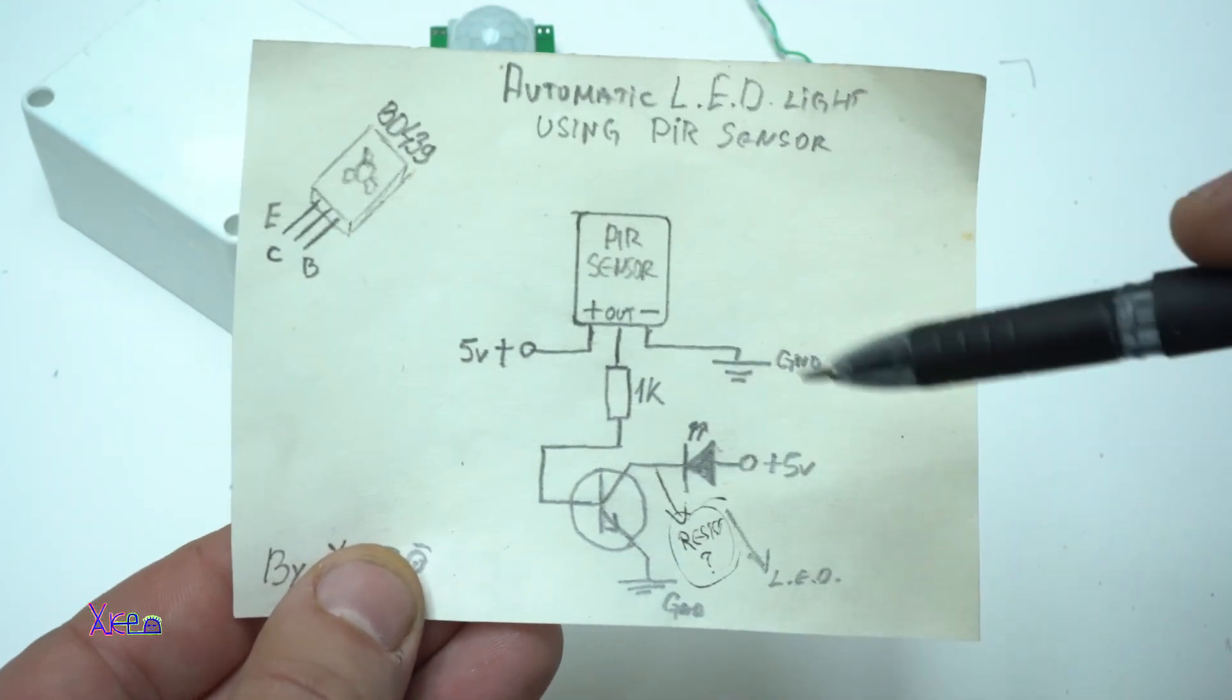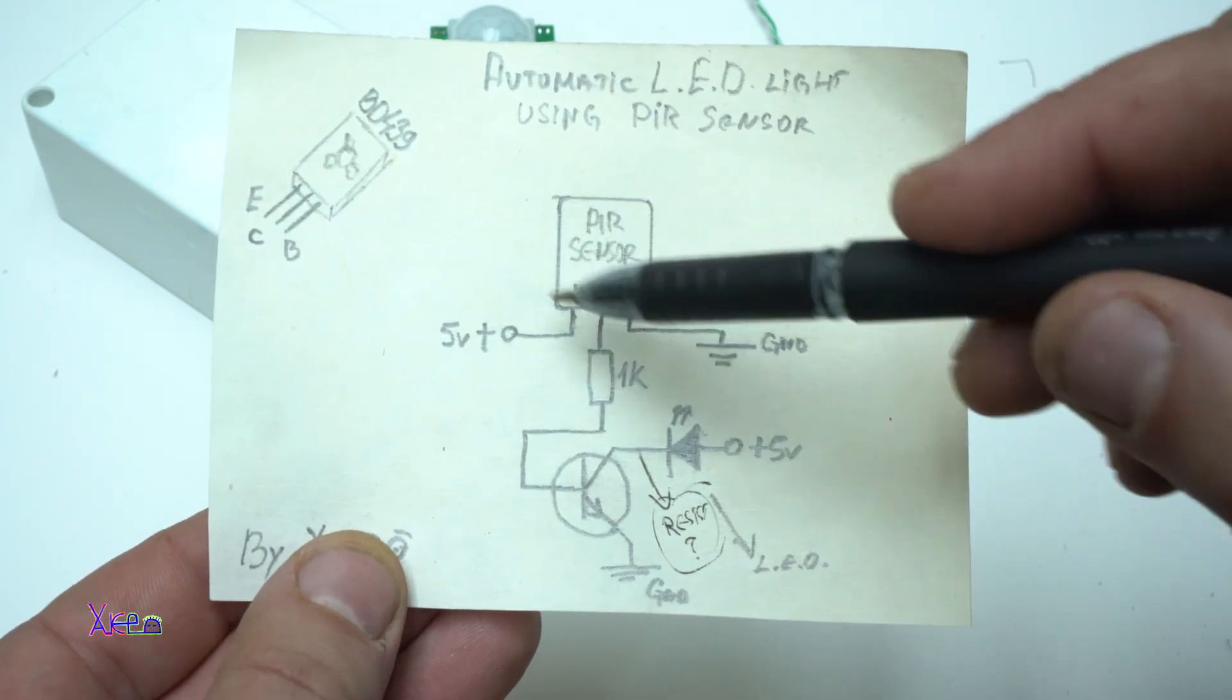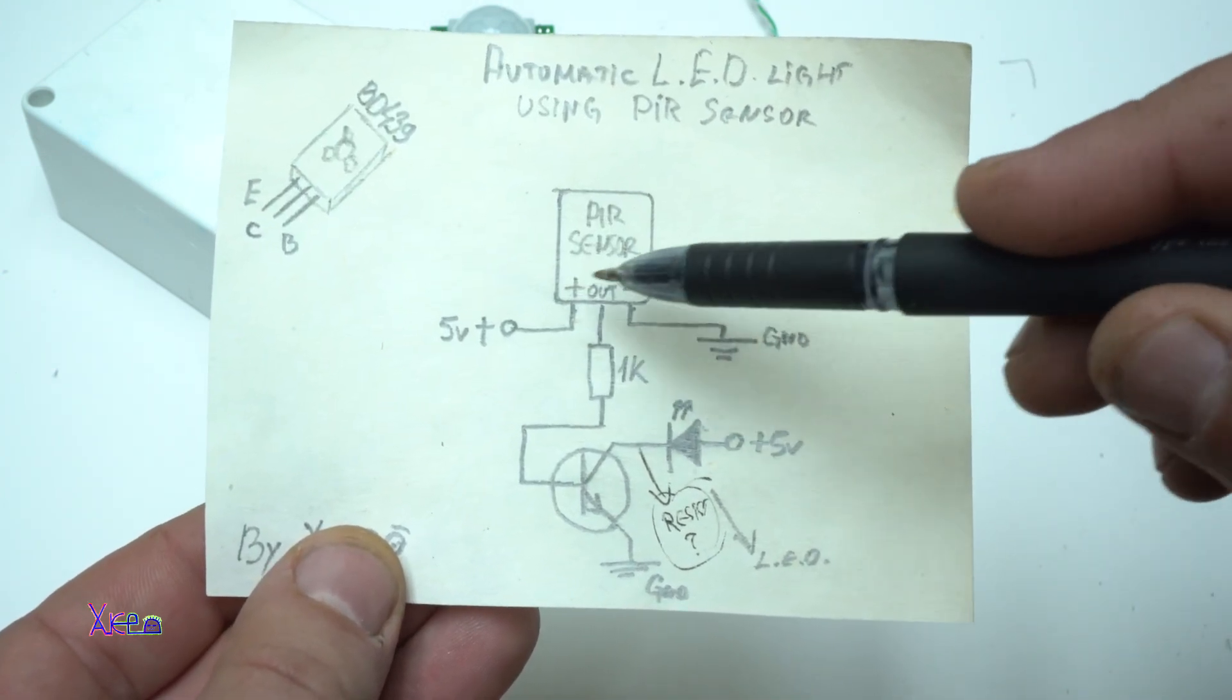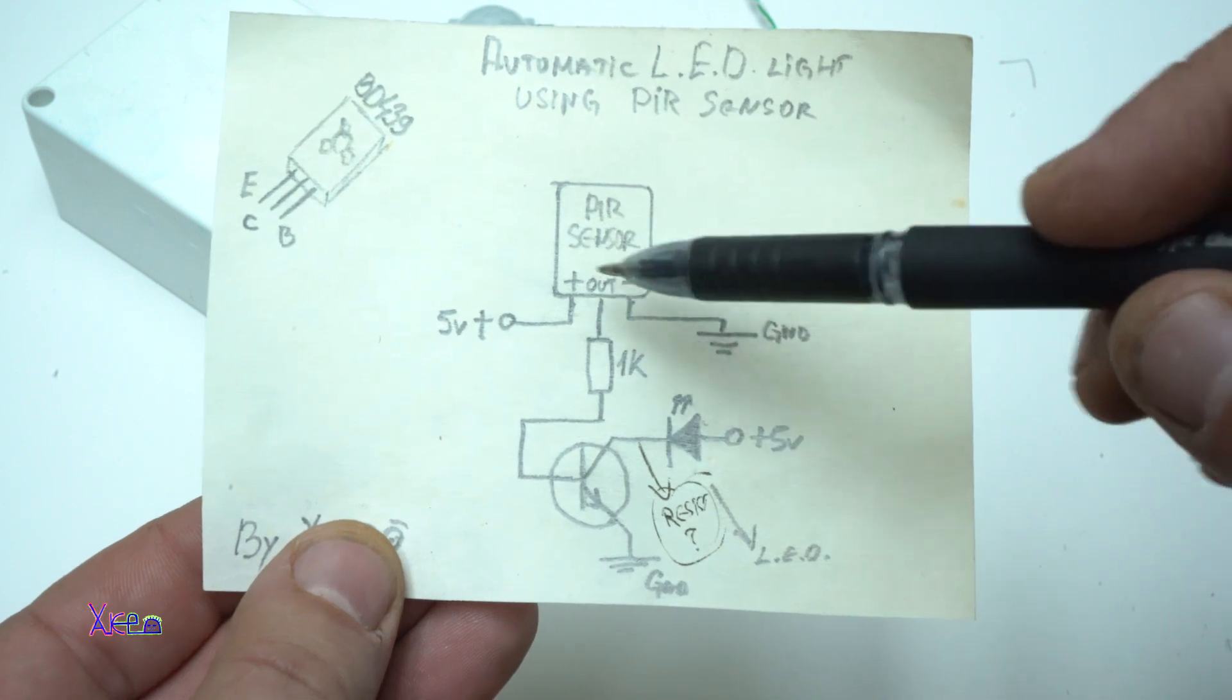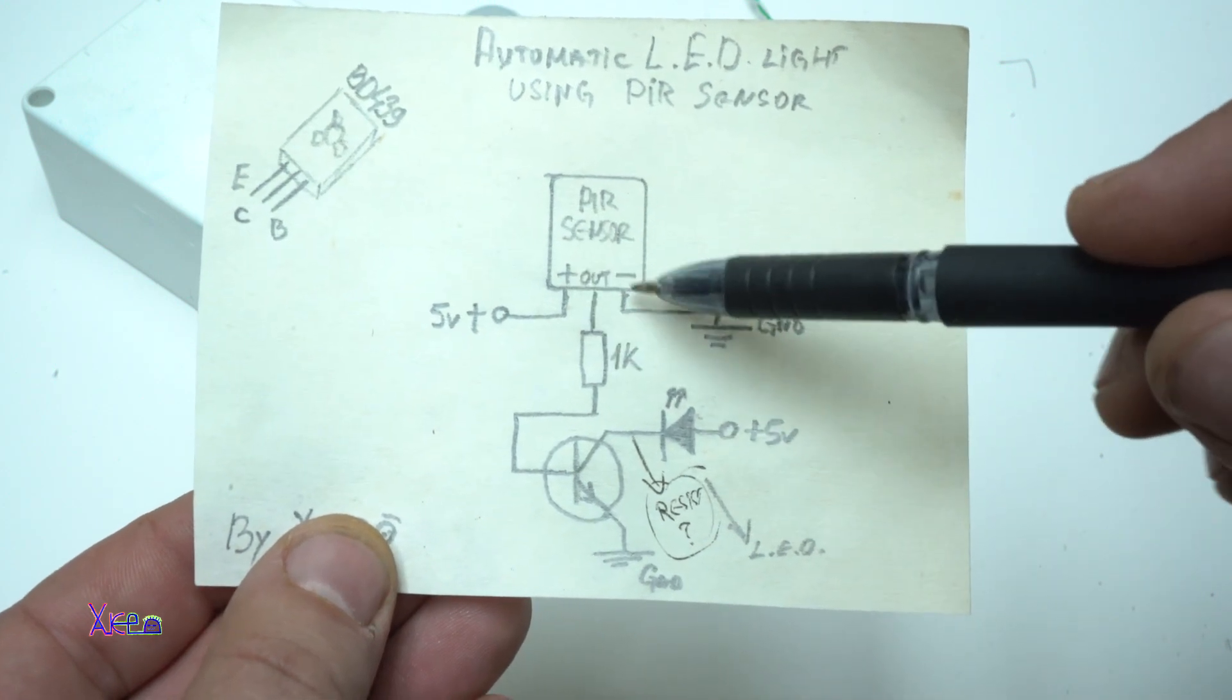To explain the circuit is very simple. Here is the PIR sensor that has three pins: positive, negative for ground, and out.